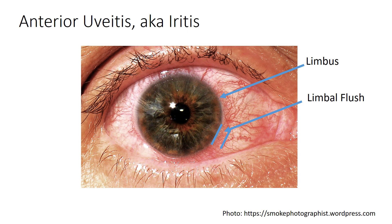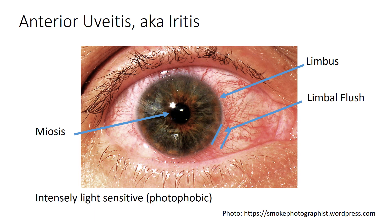Limbal flush is the area of intense redness between the two blue parallel lines and is a characteristic sign of iritis. Other signs include a small miotic pupil from spasm of the sphincter muscle of the iris. Patients also tend to be intensely photophobic because light causes further constriction of their inflamed iris, and the constriction is very painful.